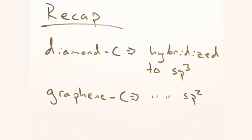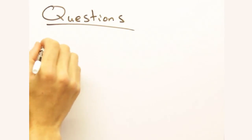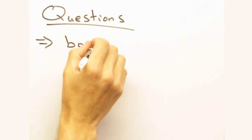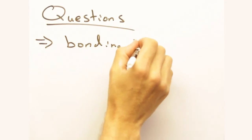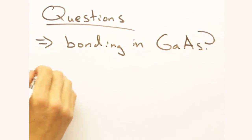But before we leave Eric, I suggest we pose some questions to our viewer. While we looked at elemental systems, it would be good to think about compounds composed of different materials like, say, gallium arsenide. What would bonding look like in this material and how would you know?